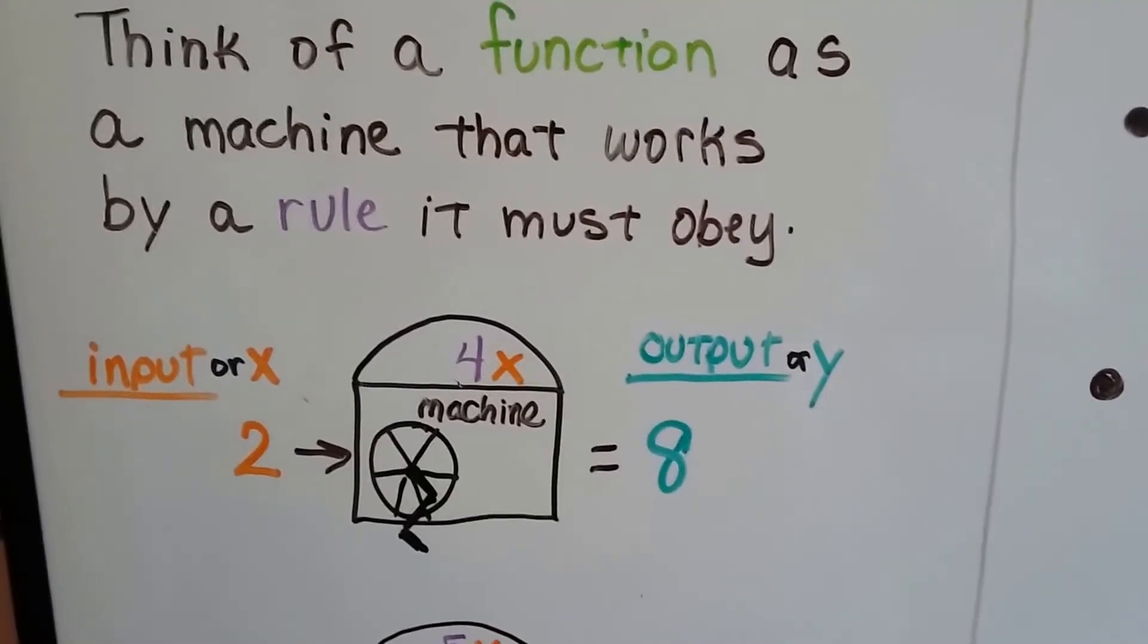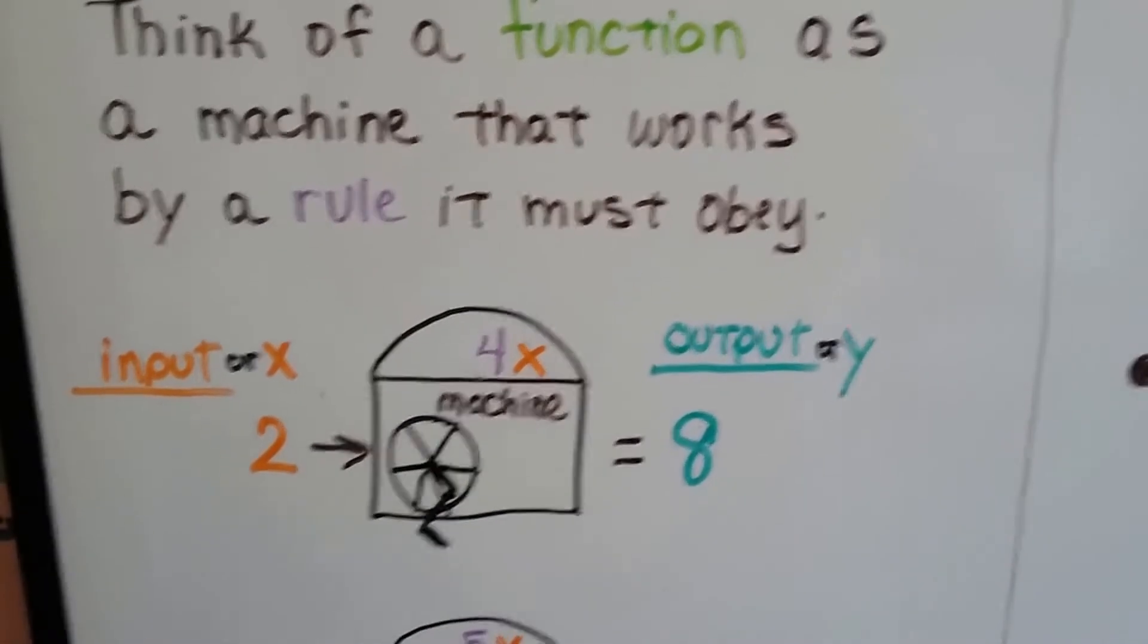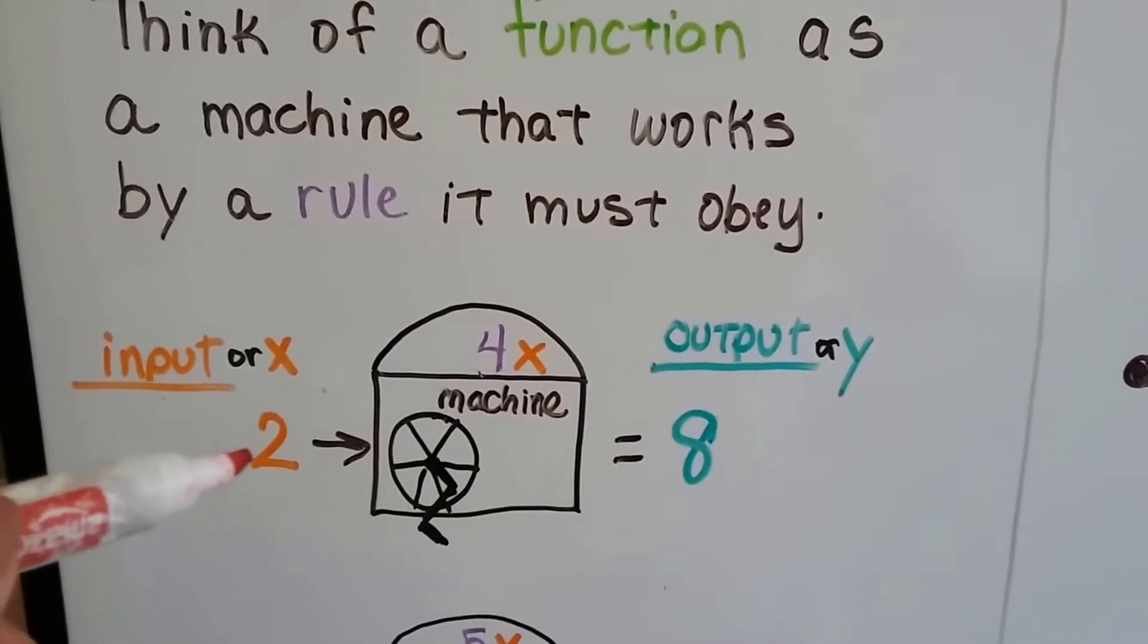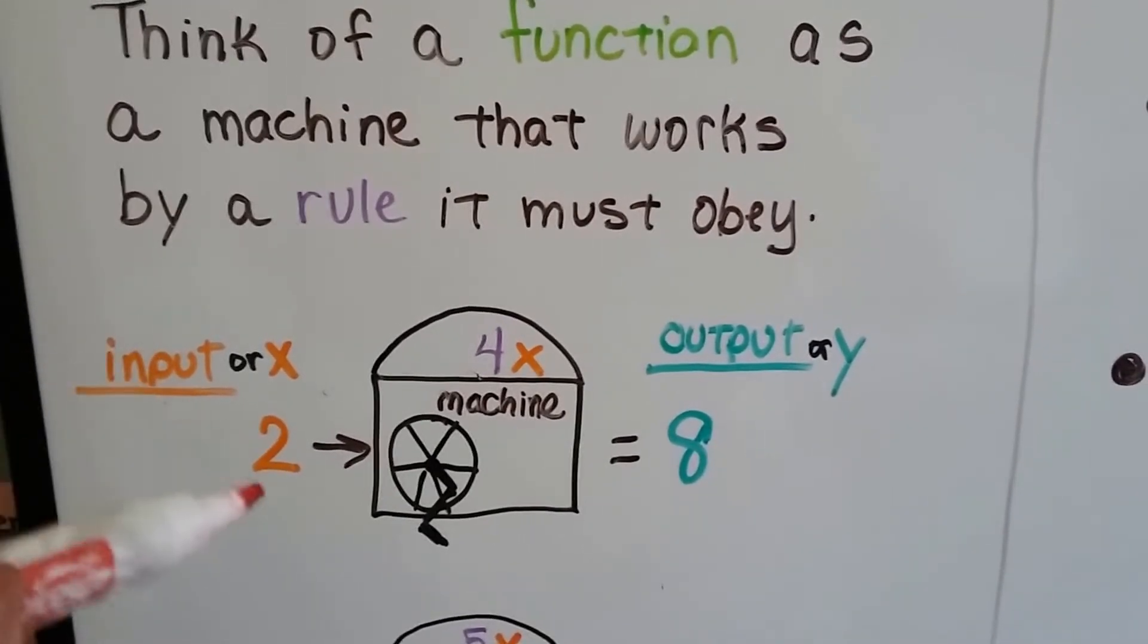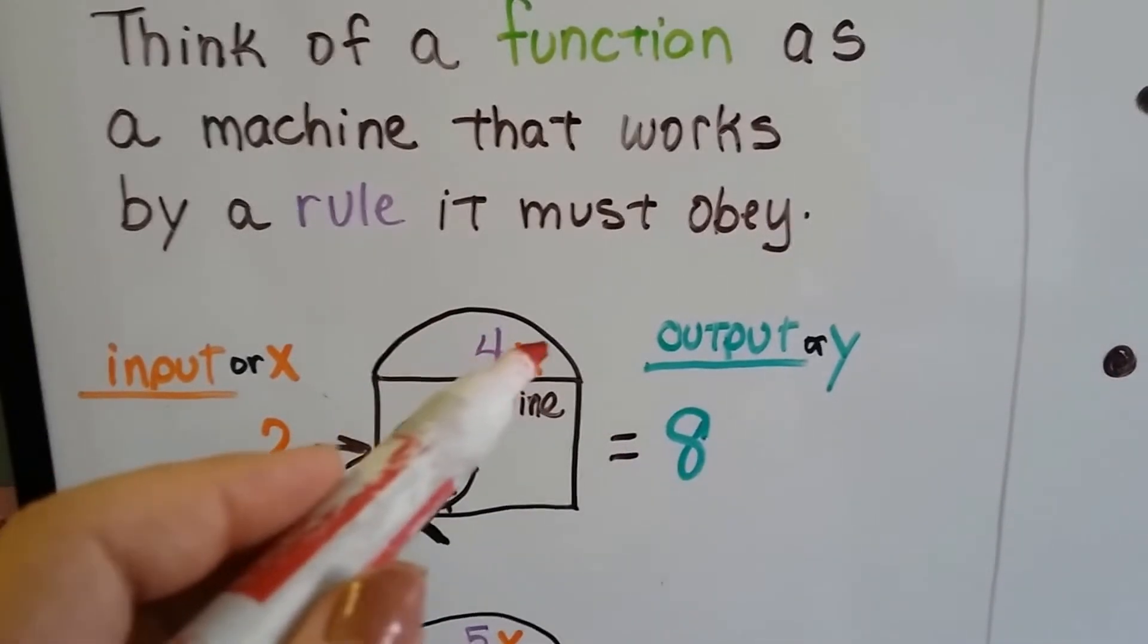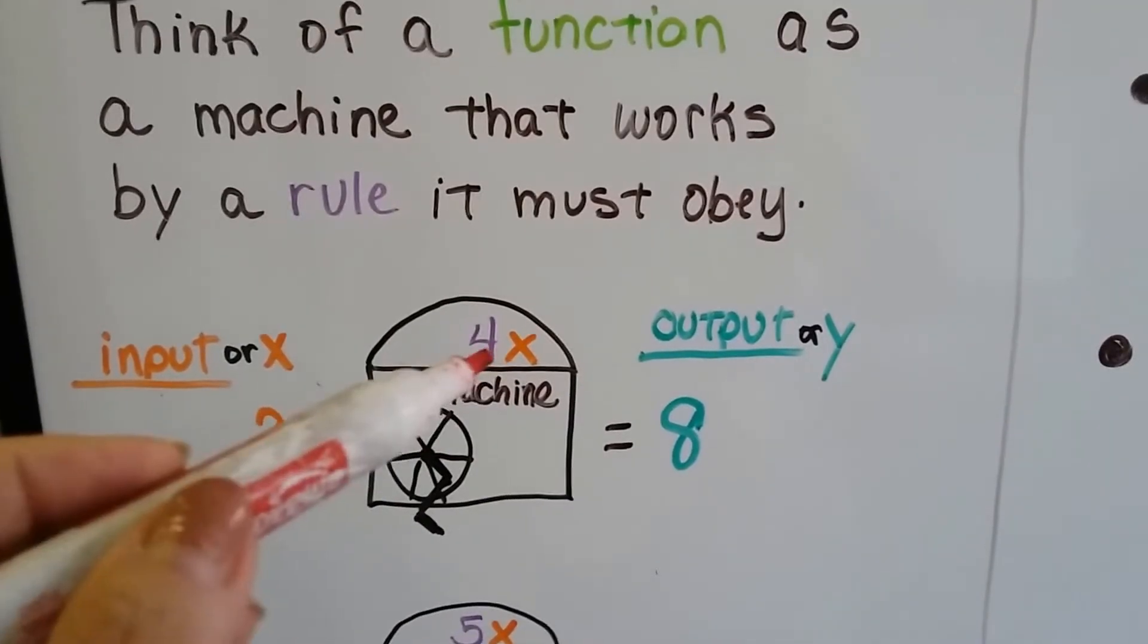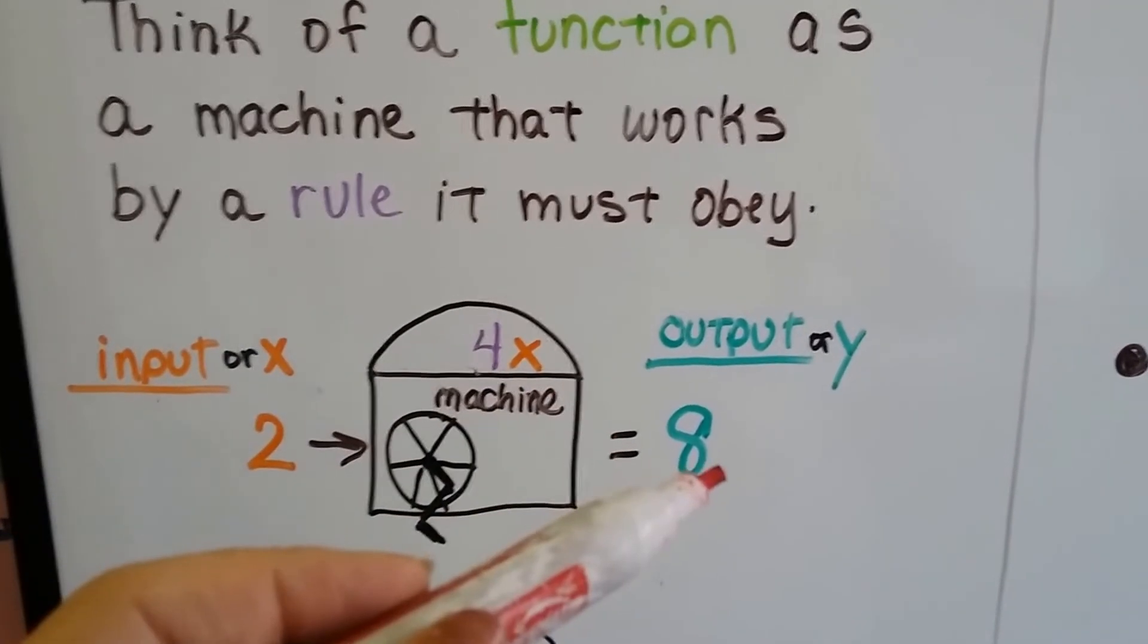This one function machine right here is the 4x machine. The x is what we're going to be putting in it, its input. The output is what's going to happen when 4 is multiplied to x. So if x is a 2, the output is going to be an 8.